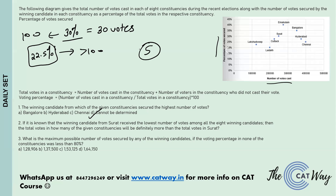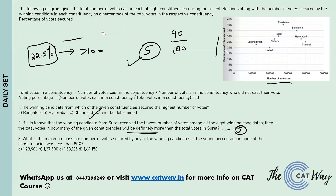Ernakulam's winning candidate got 40% of the votes, so even if there were 100 people, the person would have got more votes than Surat's candidate. It is possible the Ernakulam constituency could have equal or fewer voters than Surat, or more — we cannot say with certainty. The same applies to Bangalore. Since the question asks for constituencies that are definitely more, the answer is five: Ladakh, Lakshadweep, Katak, Hyderabad, and Chennai.